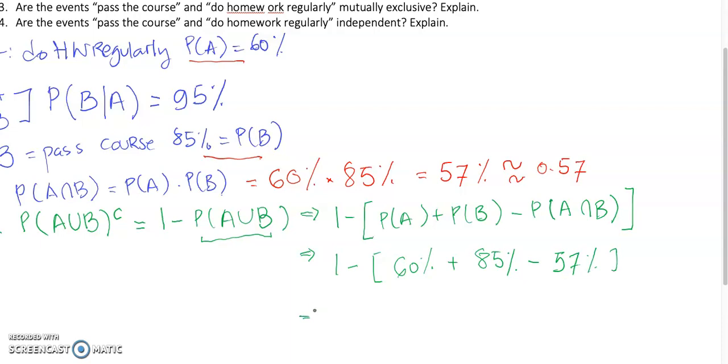So, this would be 1 minus P(A) was 60 percent plus P(B) is 85 percent minus P(A and B) from part 1 is 57 percent. So, this would be equal to 1 minus 60 plus 85 minus 57, 88 percent. This should be 100 percent, because we're using percent.